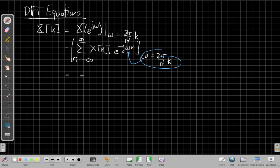So let's see what happens when I do that. If I make that substitution, I get a sum over all time of x of n times e to the minus j omega. And so that omega is now 2 pi over n times k. And then I still have this extra n here, too. So this says for any signal, I can do this.